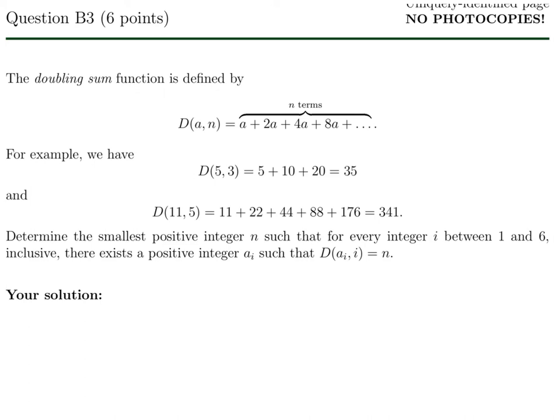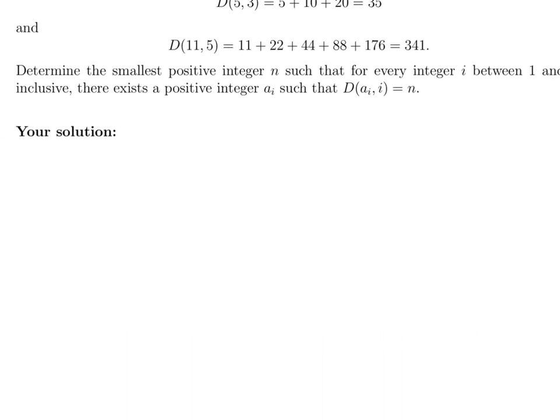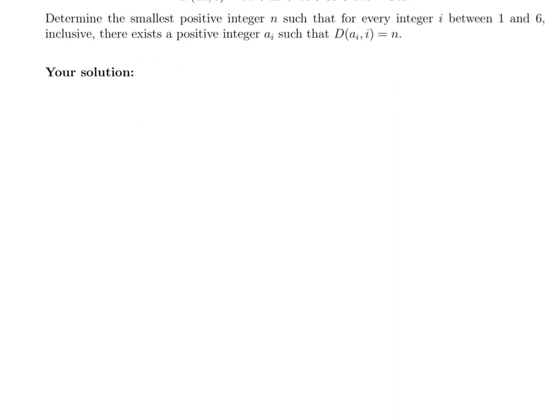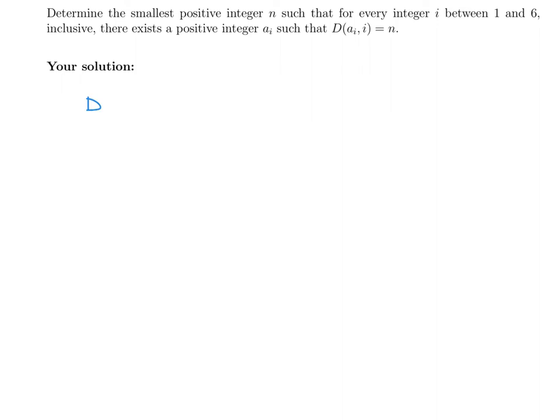Determine the smallest positive integer n such that for every integer i between 1 and 6 inclusive, there exists a positive integer a i such that D of a i equals n. Alright. So, based on this definition, we have the following, that D of a1, 1 is equal to n. And D of a2, 2 is equal to n. Exactly. I'm just doing that from 1 to 6, which is what they want. D of a3, 3 is equal to n. D of a4, 4 is equal to n. Couple more. D of a5, 5 is equal to n. And finally, D of a6, 6 is equal to n.